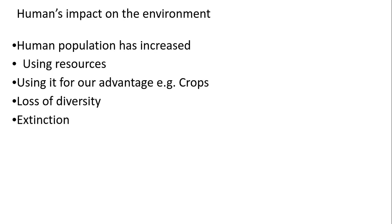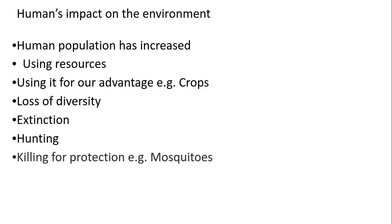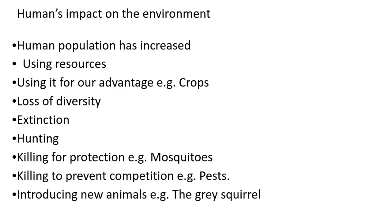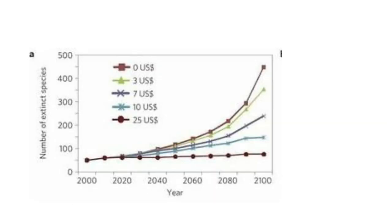We can also create extinction through hunting, and we kill for protection — for example, mosquitoes — which also decreases biodiversity. We kill to prevent competition from pests, and we cause the introduction of animals that cause problems. For example, the grey squirrel from America carries squirrel pox, which kills off the red squirrel native to the UK.